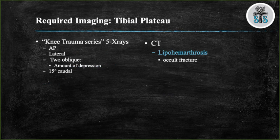When you evaluate someone with a tibial plateau fracture, you should obtain the knee trauma series of x-rays, which consists of five radiographs: an AP, a lateral, two obliques, and a 15-degree caudal view. The oblique views help determine the amount of depression, and the 15-degree caudal view gives you the ability to assess the tibial articular surface. In practice, most tibial plateau fractures are best assessed with a CT scan.